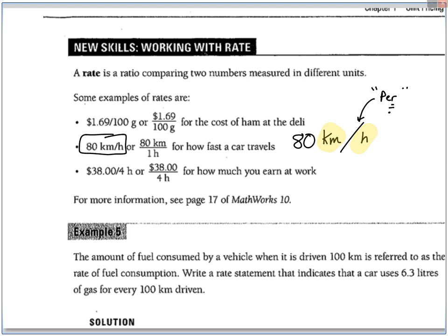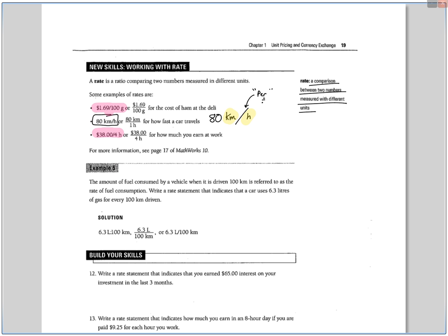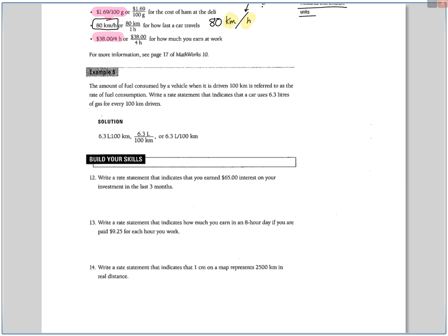Very common rates, you'll see in the grocery market for pricing for food. This is the price for 100 grams. So it's $1.69 per 100 grams of meat that you buy. And the other very common one is getting paid at your job, if you're on a wage. $38 per every four hours that you work.